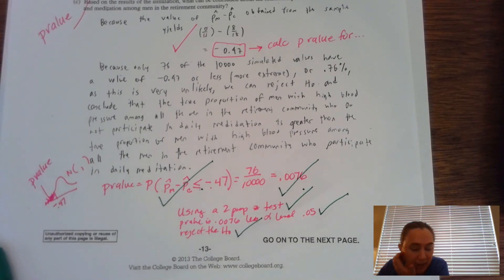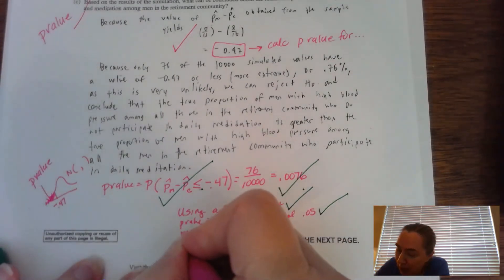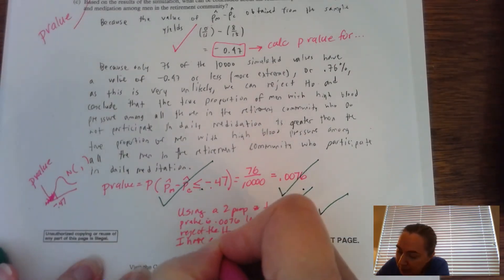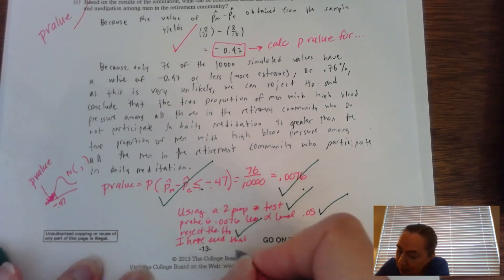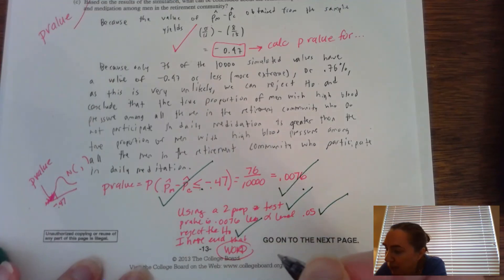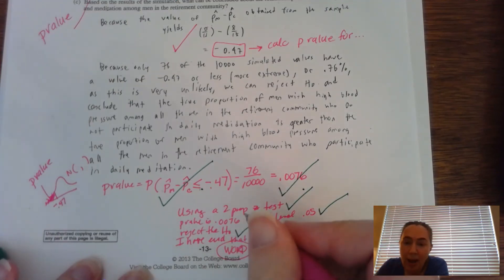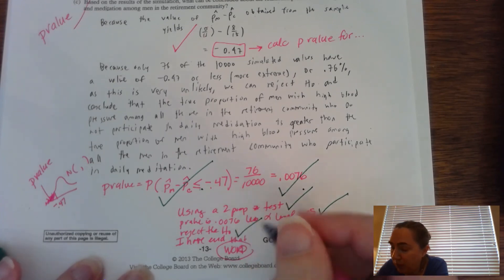And the final thing is that you, I have evidence. Use the words of the question. The words of the problem. That our H_A says that, that meditation is going to reduce blood pressure.